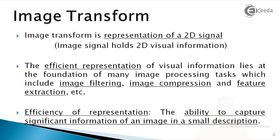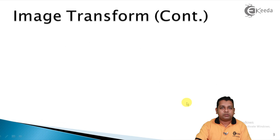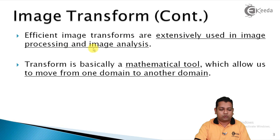Efficiency of representation can be defined in one line: it is the ability to capture significant information of the image in a small description. In less amount of memory and less amount of samples, we should be able to represent that much of image information, and that is possible with the help of image transforms. These efficient image transforms are extensively used in the image processing and image analysis domains.